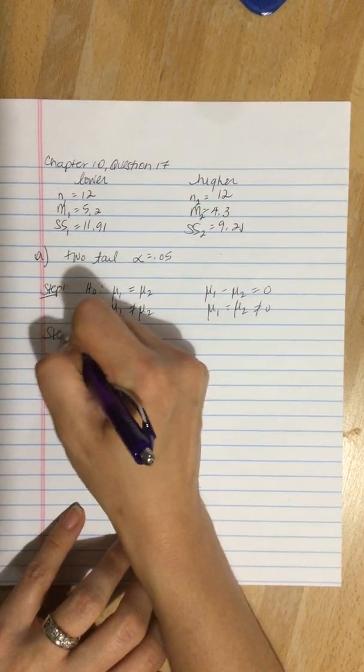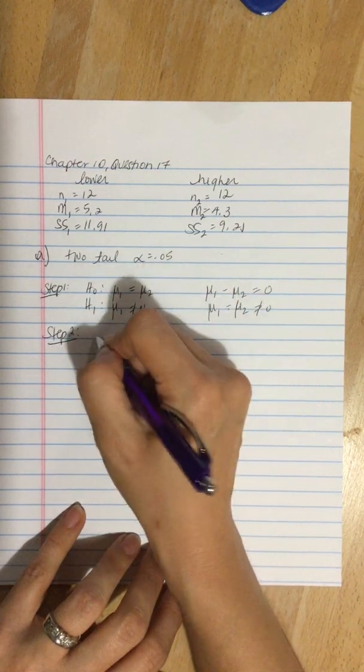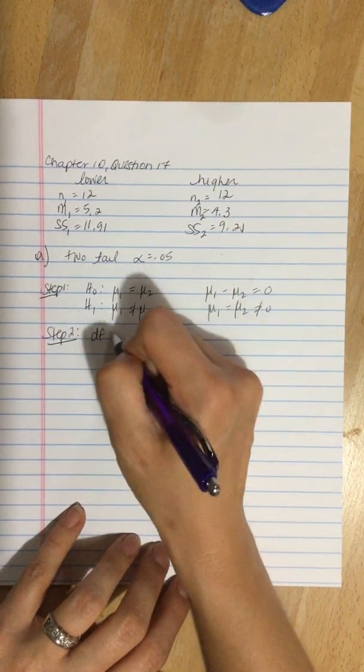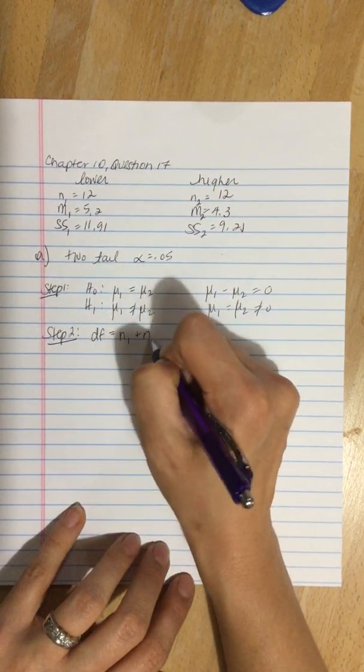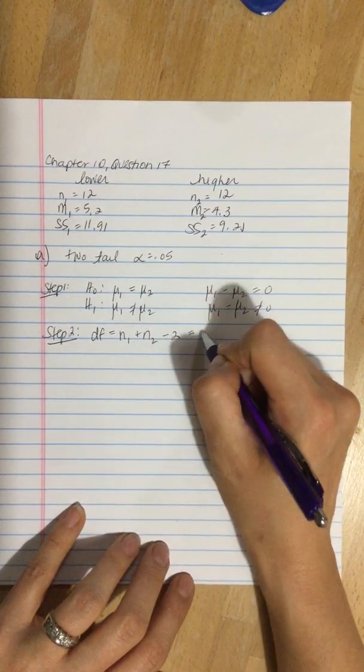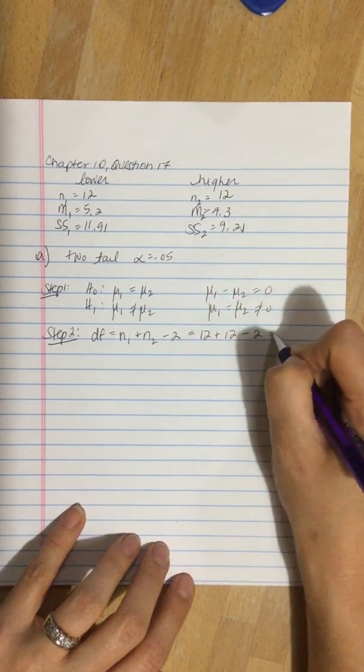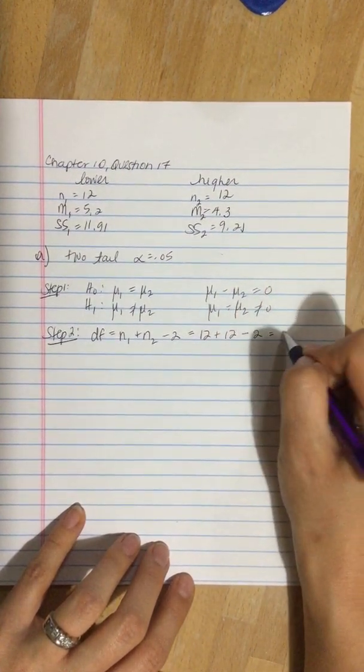Step 2 is to find our critical values. To do that we need our degrees of freedom. That's n₁ + n₂ - 2, which is 12 + 12 - 2, so that's 24 - 2 = 22.